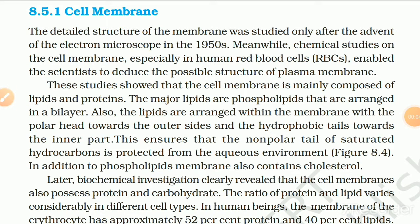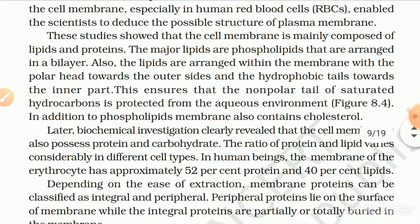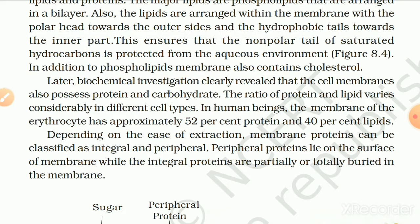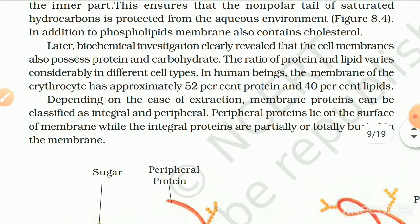The detailed structure of the membrane was studied after the advent of the electron microscope in the 1950s. Chemical studies on the cell membrane, especially in human red blood cells, showed that the cell membrane is mainly composed of lipids and proteins. The major lipids are phospholipids arranged in a bilayer, with the polar head towards the outer side and the hydrophobic tail towards the inner part. This ensures the non-polar tail of saturated hydrocarbons is protected from the aqueous environment. In addition to phospholipids, membrane also contains cholesterol.